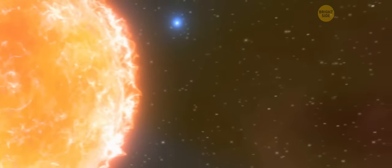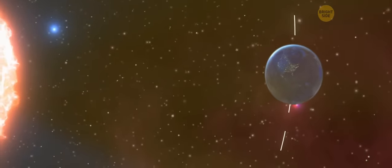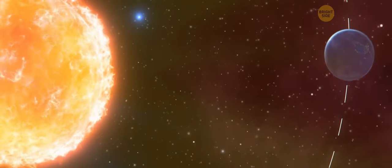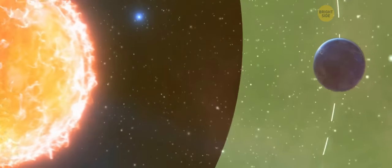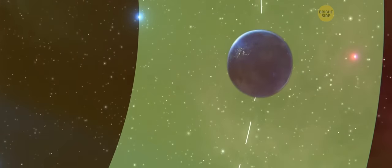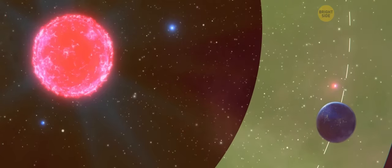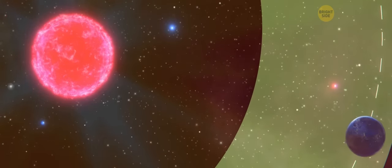But an even bigger problem would be with our orbit. The sun has a certain gravitational force, and it keeps us just in the sweet habitable zone, where we're not too hot and not too cold. Proxima Centauri's gravity is much weaker, and Earth is slowly drifting away from the star.